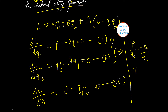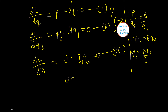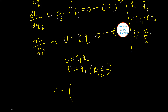Therefore p1·q1 equals p2·q2, which is a familiar equation. Solving for q2 gives q2 equals p1·q1/p2. Substituting into u equals q1·q2 and solving, we get q1 equals (p2·u/p1)^(1/2), which gives us the values needed for the indirect utility function.